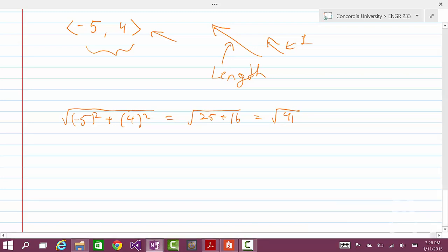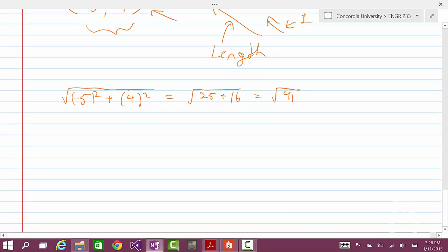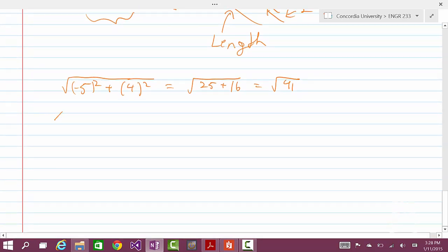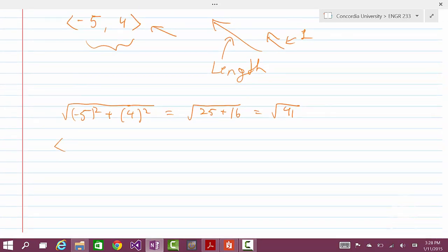Okay, so square root of 41. So that's the magnitude of this vector. And to find the unit vector, it would then mean we have to take this vector, negative 5 and 4, and divide it by 41.